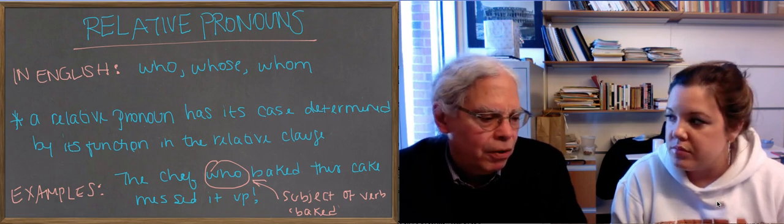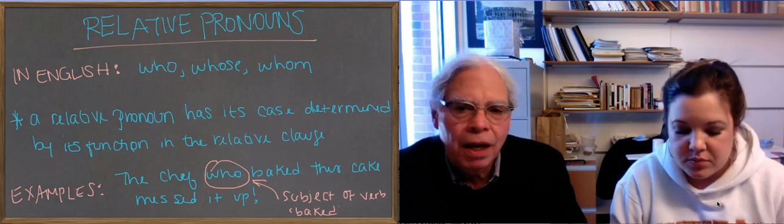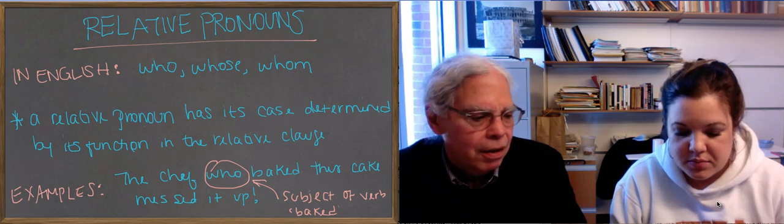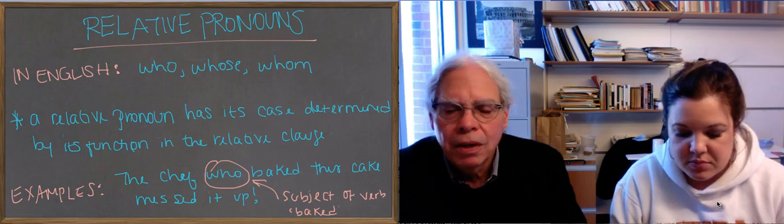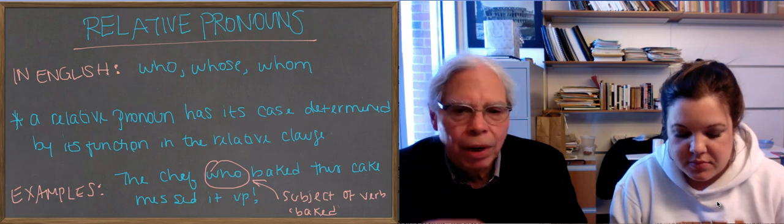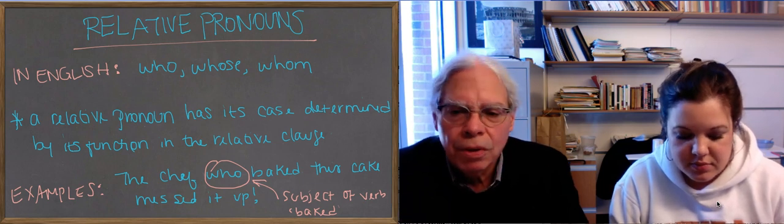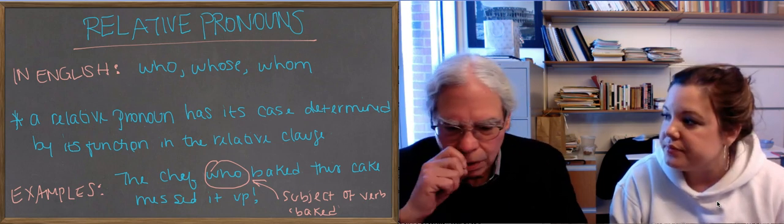But because the relative pronoun can't stand by itself, you can't have a sentence that I like, it has to be part of a bigger sentence, the person that I like. So they're dependent clauses, not independent ones.